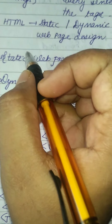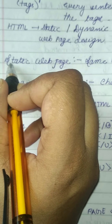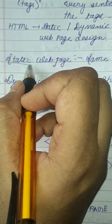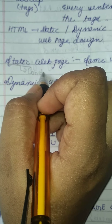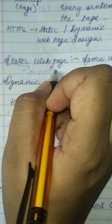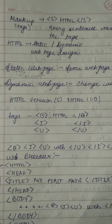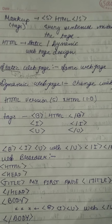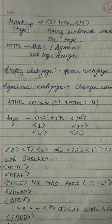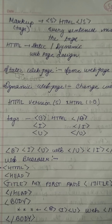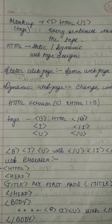In web page design, if you look at a static web page — the word static means constant. That means it is the same web page. Dynamic means a changing web page. So some web pages are static and some are dynamic.